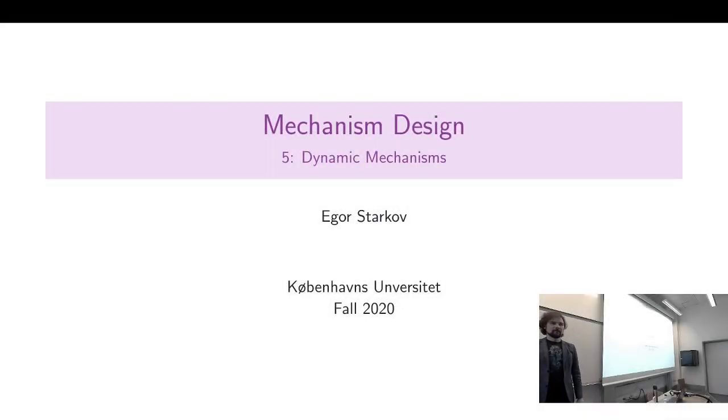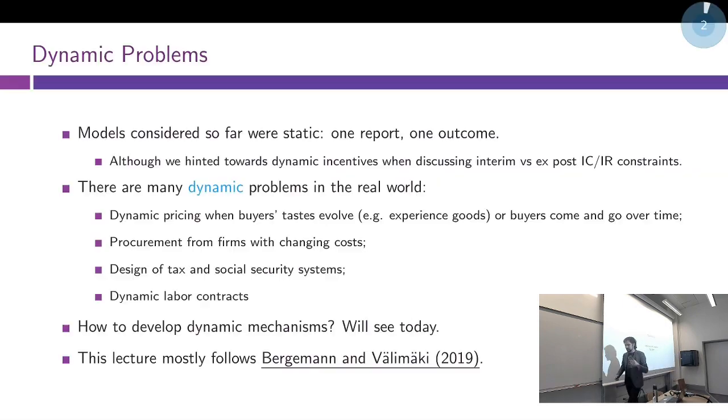So now we move on to a completely different topic. We are now all done with mechanisms with correlated information, except as you will see, correlated information will kind of manifest itself here as well. The topic that we will now begin and continue next week is dynamic mechanisms. All the mechanisms and settings that we have looked at so far were inherently static. There is just one piece of information that we want to extract from all agents, one round of reporting, one action to be done, and that's it. We never see each other ever again.